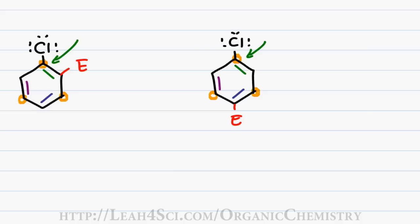So the question is if they're ortho-paradirectors and it looks favorable, why are they considered deactivators? And this comes from the fourth bonus resonance that we talked about in the electron donating group video. A bonus resonance structure can happen when the substituent has a lone pair of electrons that is capable of resonating into the ring.